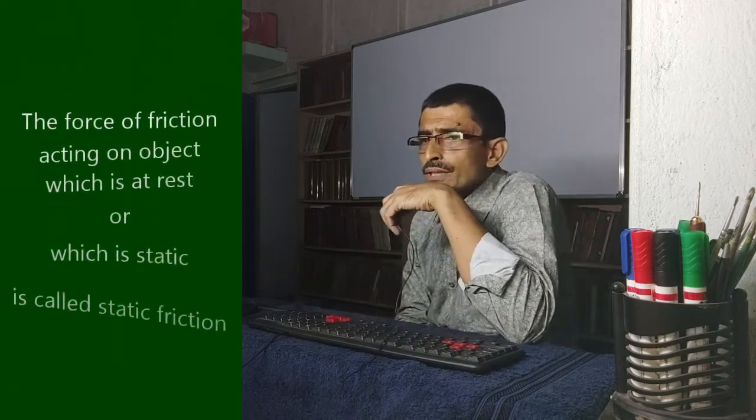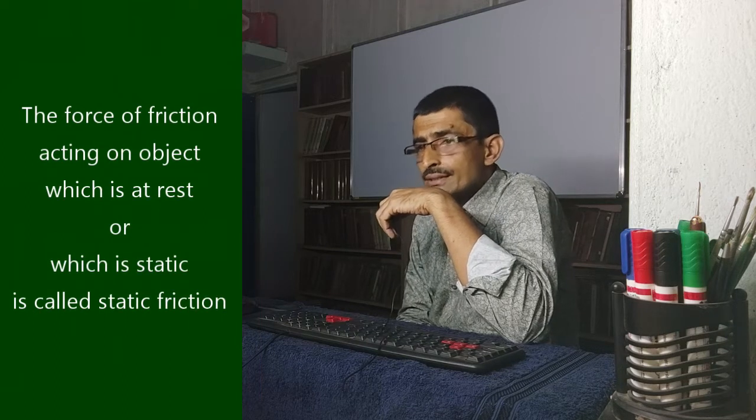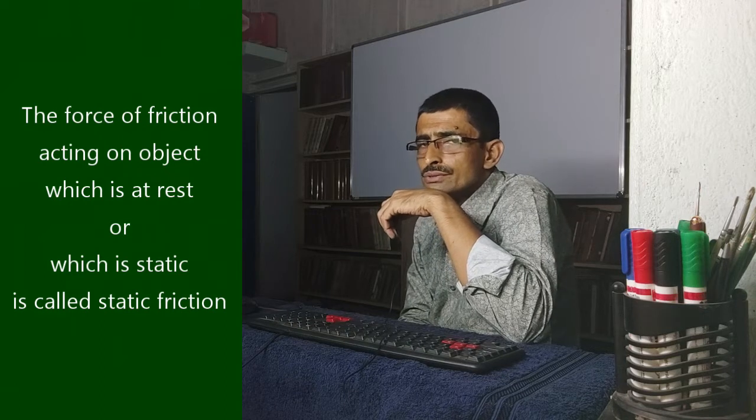There are mainly two types of friction. When an object is at rest and we are trying to make it move, a frictional force acts between the surface of the object and the surface on which it is kept. The box generally does not move when we start pushing it, because the frictional force acts with a greater magnitude than our pushing force. We can make the box move if we gradually increase the pushing force. The force of friction acting on an object which is at rest or static is called static friction.